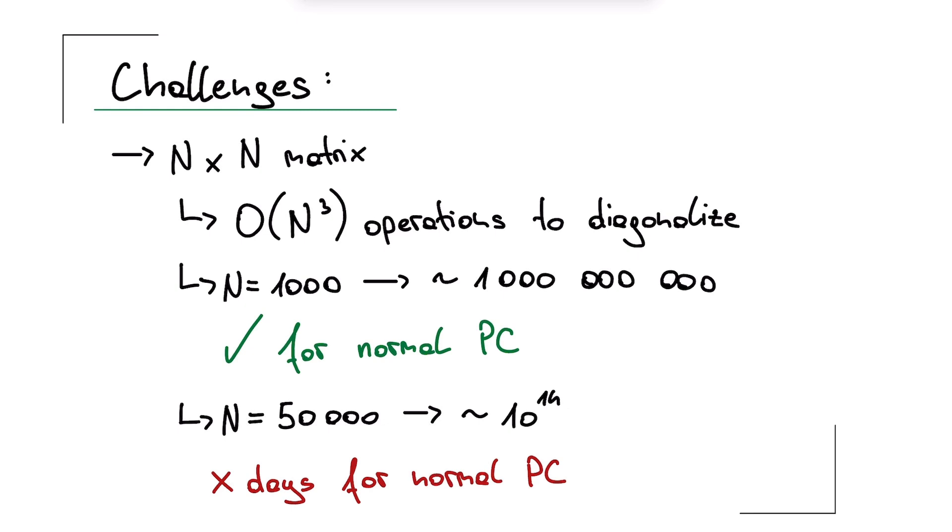But if we go up to something like 50,000 by 50,000, then we already have about 10 to the power of 14 operations. On a normal PC that would take days. This quick back of the envelope calculation assumes that we really perform a full diagonalization without any approximations. That's not what is actually done in practice, but it helps give you an intuition for just how quickly the computational cost explodes.